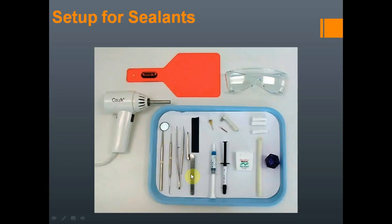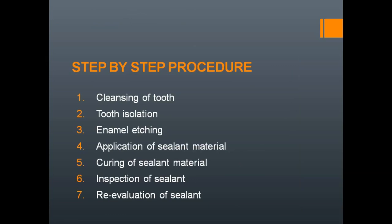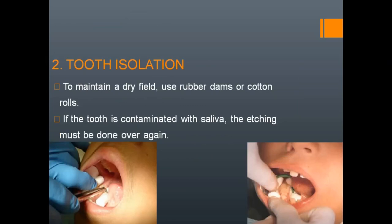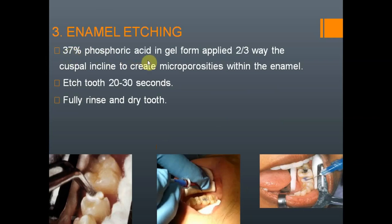The basic setup requires a curing light, type one instruments, an etching agent, and the sealant material. For composite sealant, it comes as a single component; for glass ionomer, it comes as powder and liquid. The procedure steps are: first, clean using pumice and water slurry, then wash and dry; isolate with cotton rolls; enamel etching with 37 percent phosphoric acid for 20 to 30 seconds; then rinse and dry thoroughly until a frosted enamel appearance is achieved, indicating porous enamel.